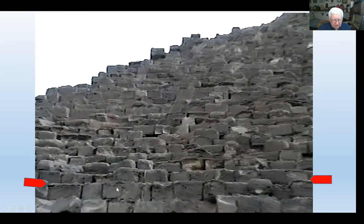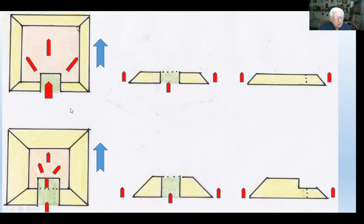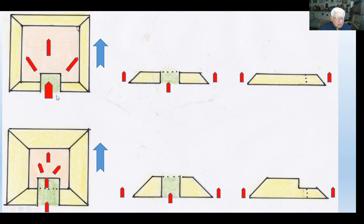Again looking at this photo of the steps of the pyramids — from a distance it looks irregular because the blocks are irregular in shape. From a long distance some look higher, some lower, but the level is all the time preserved. Now let's look at the reconstruction of the process of construction of the pyramids.